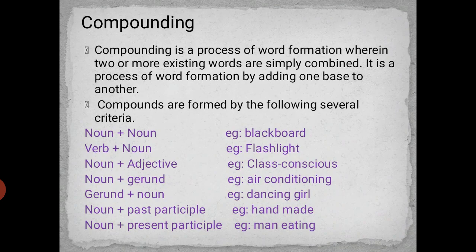The first method is compounding. Compounding is a process of word formation wherein two or more existing words are simply combined — it is a process of adding one base to another. Examples include: noun plus noun — blackboard; verb plus noun — flashlight; noun plus adjective — class conscious; noun plus gerund — air conditioning.